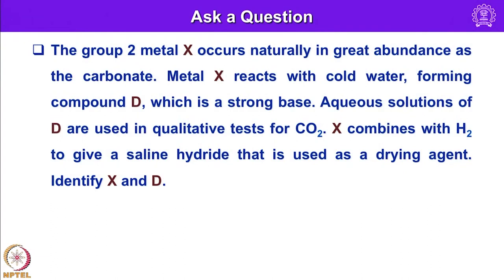There is one more similar question. A group 2 metal X occurs naturally in great abundance as the carbonate. Metal X reacts with cold water forming compound D, which is a strong base. Aqueous solution of D is used in a qualitative test for carbon dioxide. X combines with hydrogen to give a saline hydride that is used as a drying agent. Identify X and D.